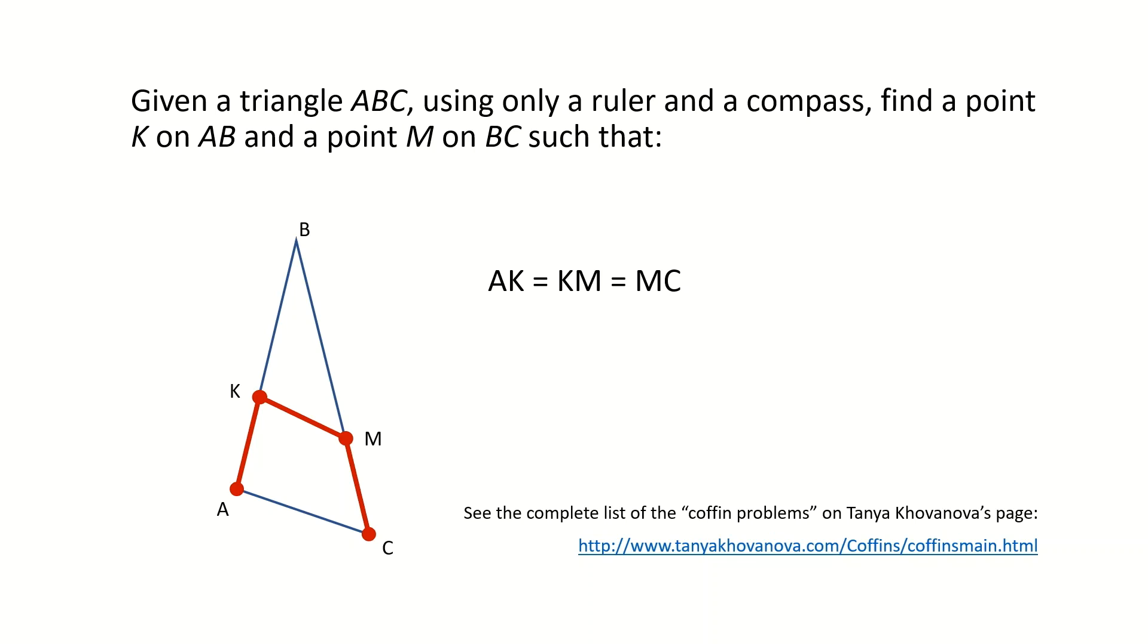Given a triangle ABC and using only a ruler and a compass, find a point K on AB and a point M on BC such that AK equals KM equals MC. In other words, we want to find a point on each side so when you connect them together and to the base corners, the three red segments you see here have equal lengths.